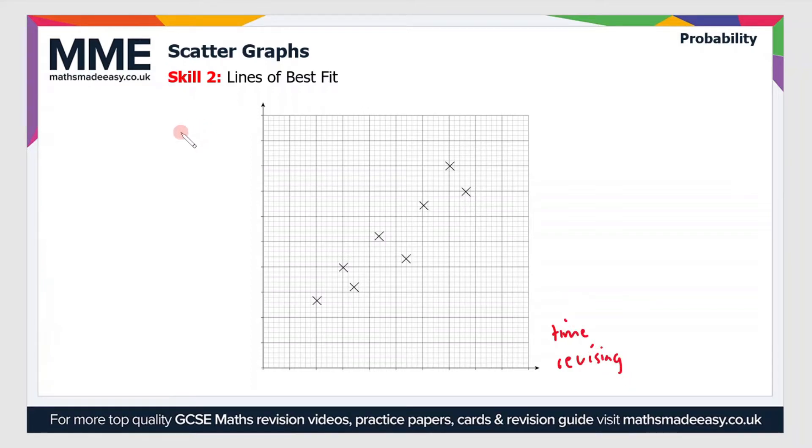And then this would be the mark in a maths exam. Now if we want to draw a line of best fit for this data, there's a few things we have to consider. First of all, it's a positive correlation, so the line will have a positive gradient, so it will be going upwards and to the right.